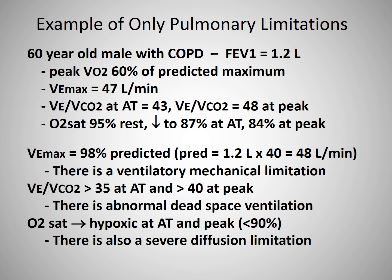His VE to VCO2 ratio was well over 35 at anaerobic threshold and above 40 at peak exercise, showing he probably had significant abnormalities of dead space ventilation. And by the fact his O2 saturations fell progressively and were in the hypoxic range by anaerobic threshold, there was also a severe diffusion limitation to exercise. In summary, this subject had a combination of ventilatory mechanical, gas exchange, and diffusion limitations to exercise.